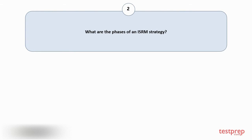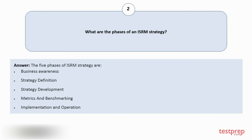Question number two: What are the phases of an ISRM strategy? The five phases of an ISRM strategy are: one, business awareness; two, strategy definition; three, strategy development; four, metrics and benchmark; five, implementation and operation.